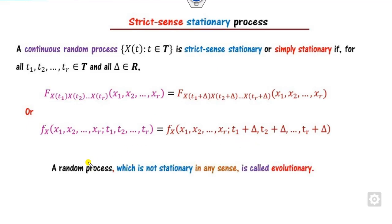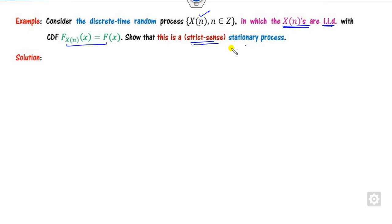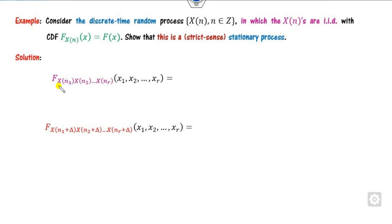Any process that is not stationary is called an evolutionary process. For example, consider a discrete random process where each of the X(n) are i.i.d. with a given CDF. Your target is to check whether this random process is a strict sense stationary process or not — that is, to prove whether the distribution at time t and at time t + δ are the same.